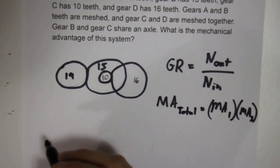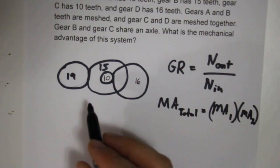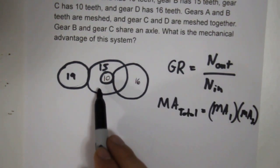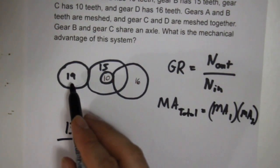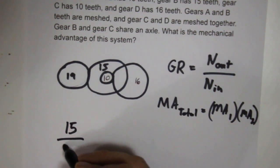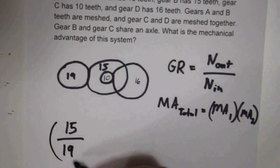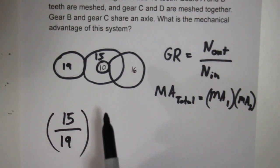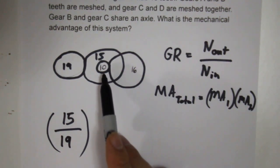So, for gear train A and B, we're going to take the number of teeth of the output, in this case the non-driven motor, divided by the number of teeth in the driven motor. We'll do the calculations in a moment, because we know that we're going to multiply that mechanical advantage by the mechanical advantage of C and D.